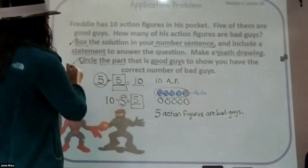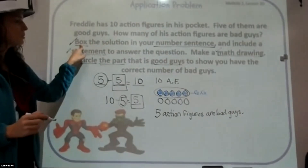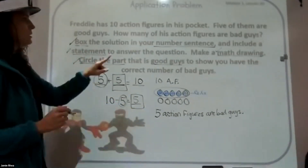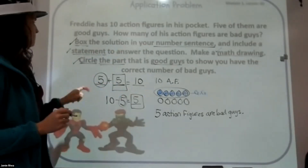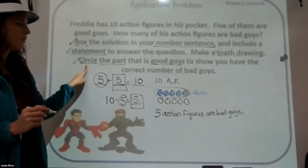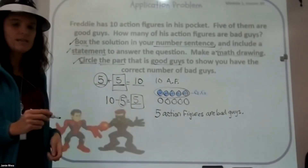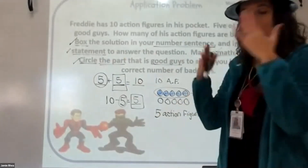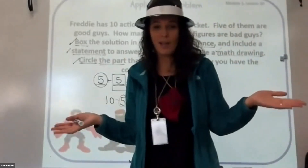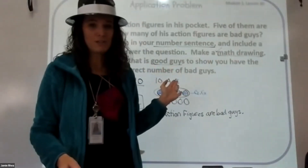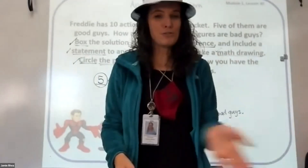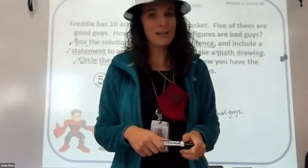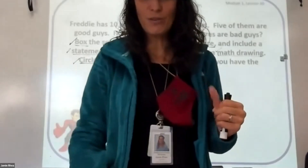Let's double-check: Did we box the solution? Yes. Did we make a number sentence and statement? Yes. Did we make a math drawing? Yes. Did we circle the good guys to show we had the correct number of bad guys? Yes. We have answered and solved everything it asked us to do. We have solved the case — Freddie has five bad guy action figures in his pocket. Make sure you clean off your whiteboard or get a new blank piece of paper, because we're doing our lesson with Miss Curry next.